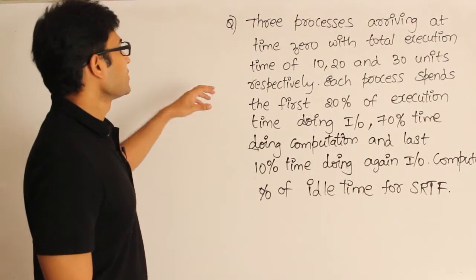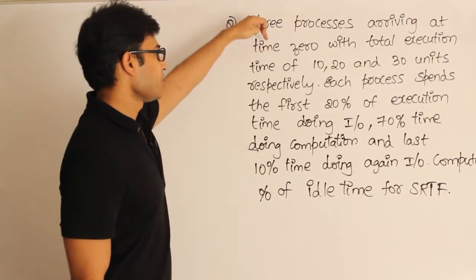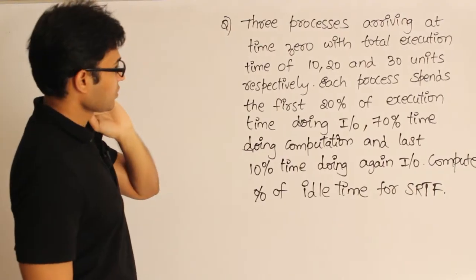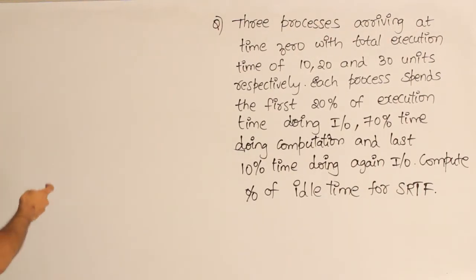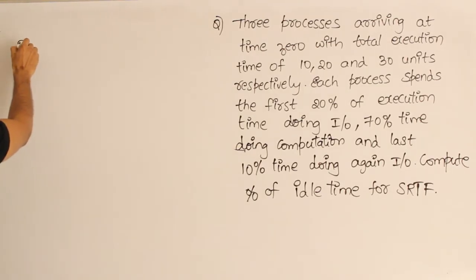The question states that three processes are arriving at time zero with execution times of 10, 20, and 30 units respectively. So they are giving this information.